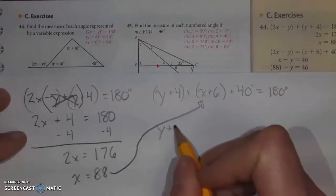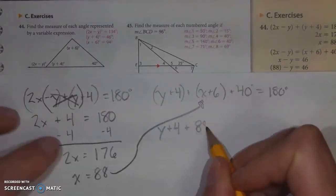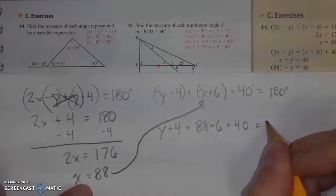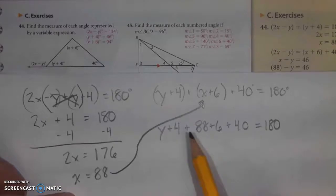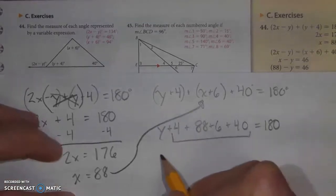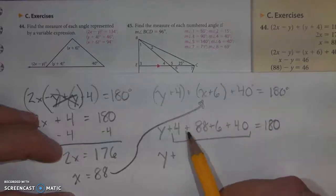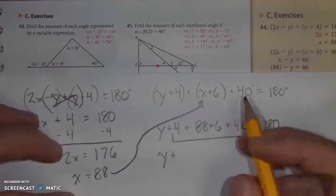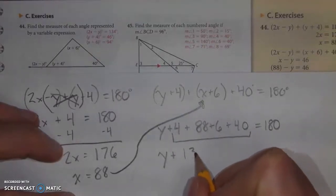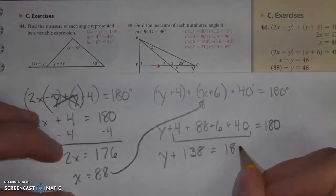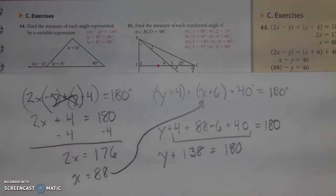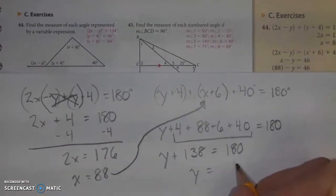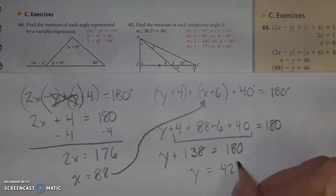So once I've substituted it, I have y plus 4 plus 88 or x plus 6 plus 40 is equal to 180. Now here I want to simplify and combine those like terms. So I'm going to actually end up with y plus, well, 4 plus 6 is 10. 10 plus 40 is 50. 50 plus 88 is going to give us 138. And all of that together added to y should give us 180. Therefore, just y is going to be 180 minus 138, which is the same as 42 degrees.